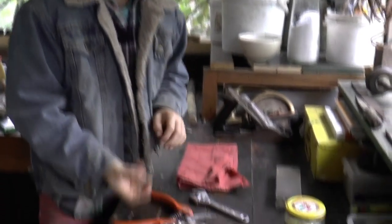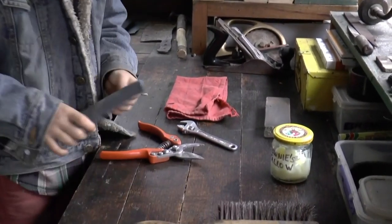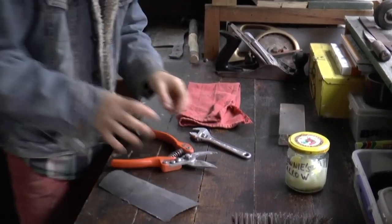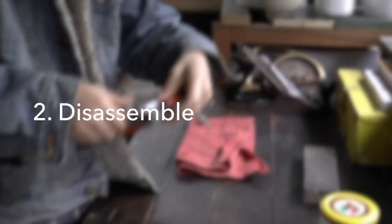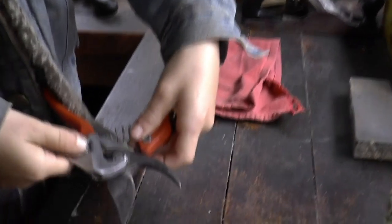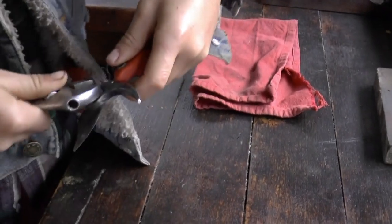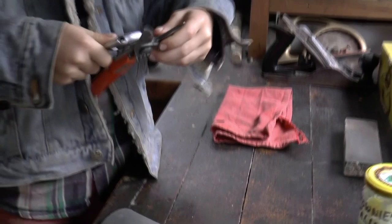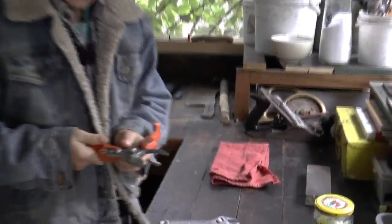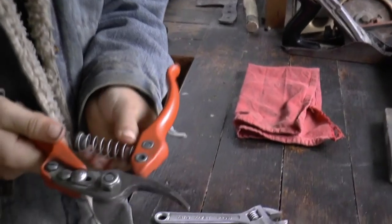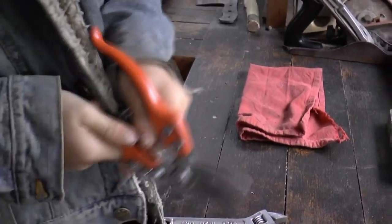So first what you do, get the shifting spanner, find that bolt there on your secateurs, just grip that. Actually first, you can see how you just take that out. The spring.